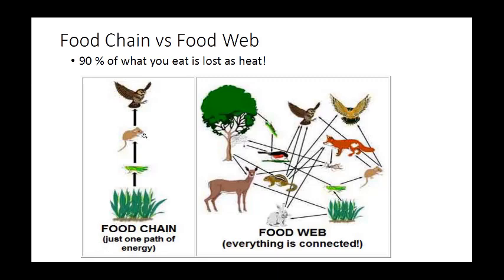Functionally, a food web shows what could eat what, while a food chain shows what did eat what. For example: what did the mouse eat? This mouse ate this grasshopper, and this grasshopper ate this grass. What did the owl eat? He ate the mouse. Over in the food web, what can the fox eat? He could eat the chipmunk, the rabbit, or the mouse — that's what's on his menu.